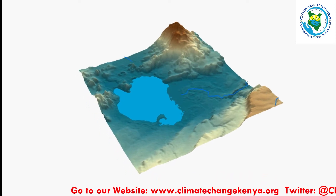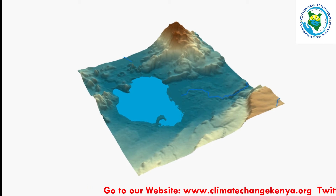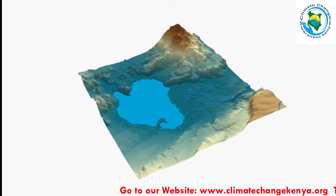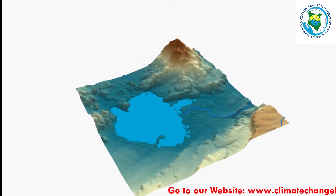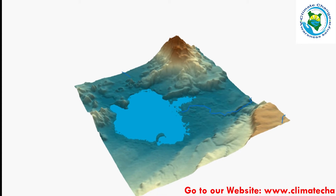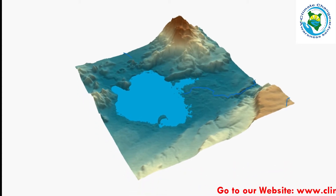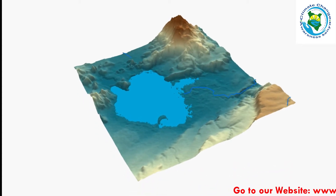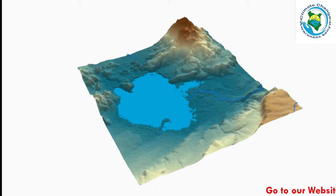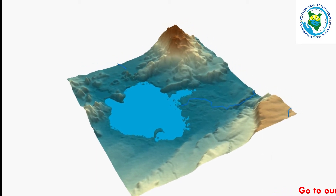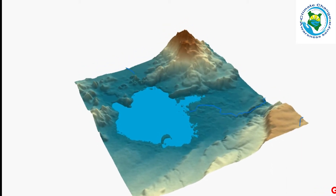Lake Naivasha is fed by three rivers: River Geligil and River Malewa, which are the two perennial rivers, and River Karati, which is the one seasonal river. They all emanate from Eburu forest and Badea forest.